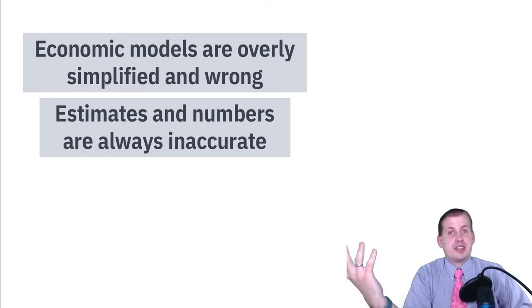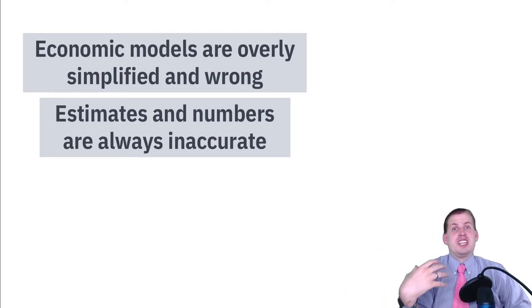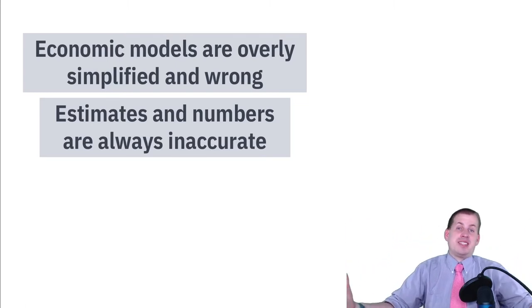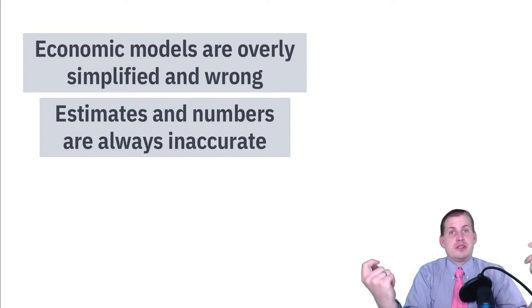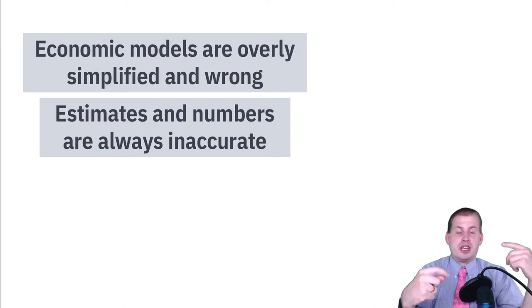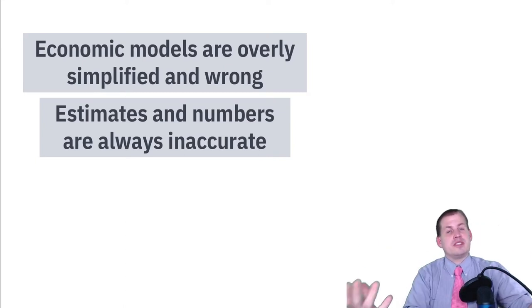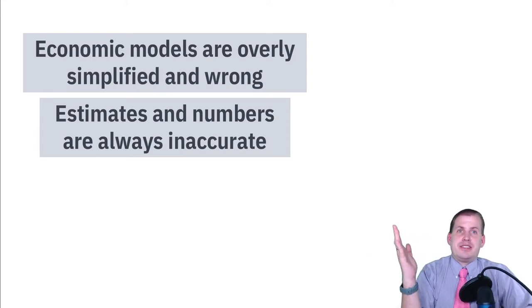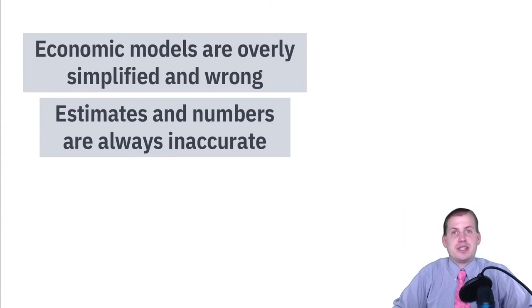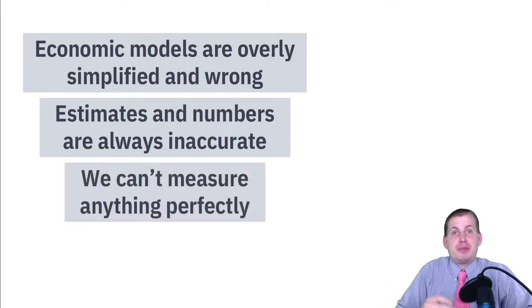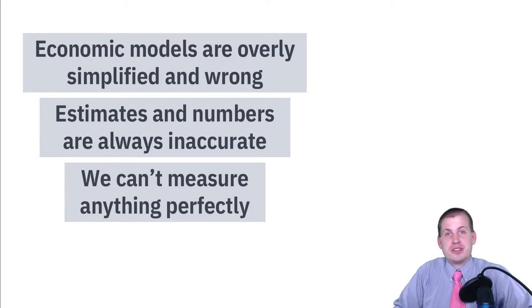The numbers we're getting are going to be wrong — that's just the nature of trying to measure things in society. When we talk about willingness to pay, the demand curve comes from a general social desire to buy stuff, but those lines from your problem sets are just equations from regression models. There are confidence intervals, uncertainty, and error — they're never going to be perfectly straight lines. We can't measure preferences or costs perfectly either.